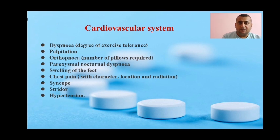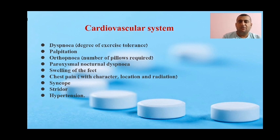To review the cardiovascular system, you should ask about dyspnea, palpitation, orthopnea — whether the patient develops shortness of breath when lying down and how many pillows are required — history of paroxysmal nocturnal dyspnea (where the patient wakes up two to three hours after going to bed with shortness of breath and goes to the window for fresh air), history of swelling of the feet, chest pain, syncope, and hypertension.